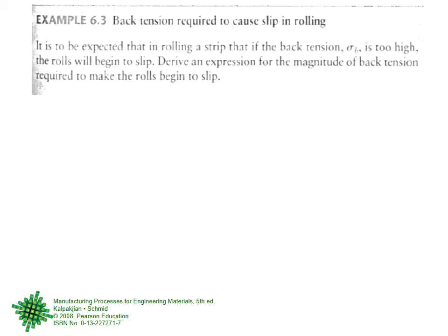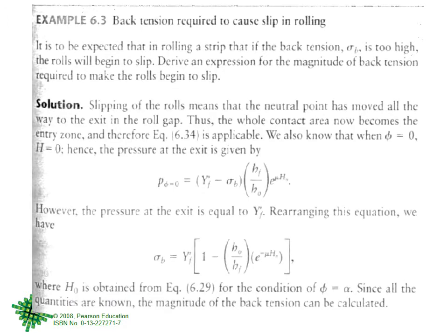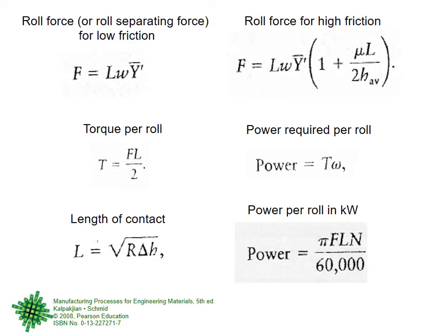Let us very quickly review the previous lecture. We did Example 6.3 on back tension required to cause slipping — where there is not enough friction so the rolls are slipping. We gave the background and mechanics in terms of shear stress. This is the main page with the practical equations for rolling. Earlier equations were more theoretical. We covered roll force calculation when friction is low, torque per roll, length of contact, and roll force when friction is high where the coefficient of friction also enters.